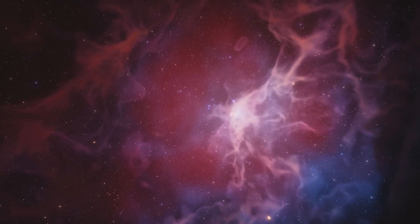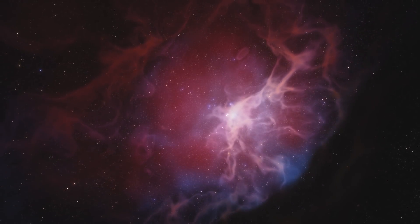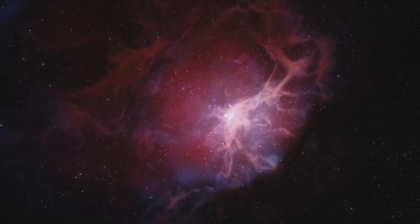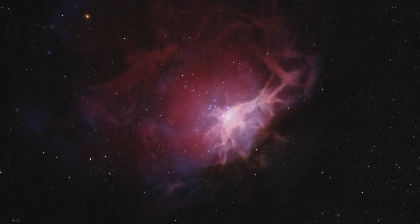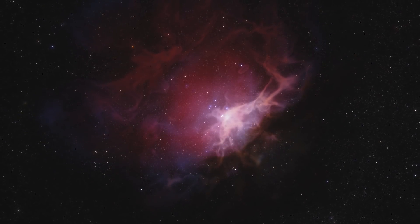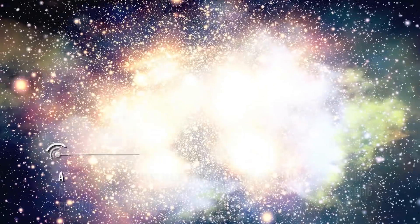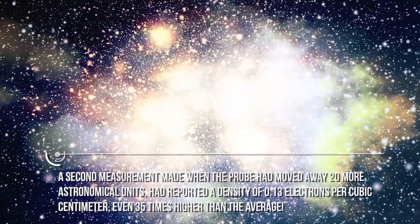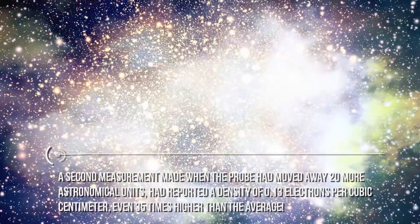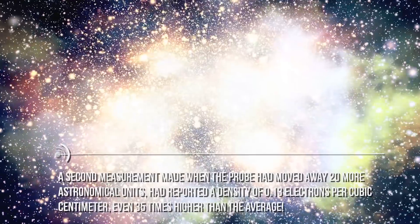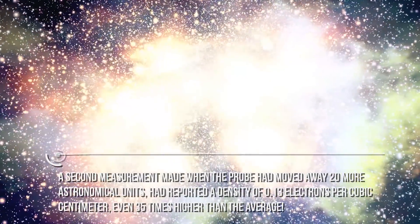The first measurement, made by Voyager 1 after passing the heliopause, made on October 23, 2013 at a distance of 18.3 billion kilometers, had instead recorded a density of 0.055 electrons per cubic centimeter, thus being 50 percent higher. A second measurement, made when the probe had moved away 20 more astronomical units, had reported a density of 0.13 electrons per cubic centimeter, even 35 times higher than the average.